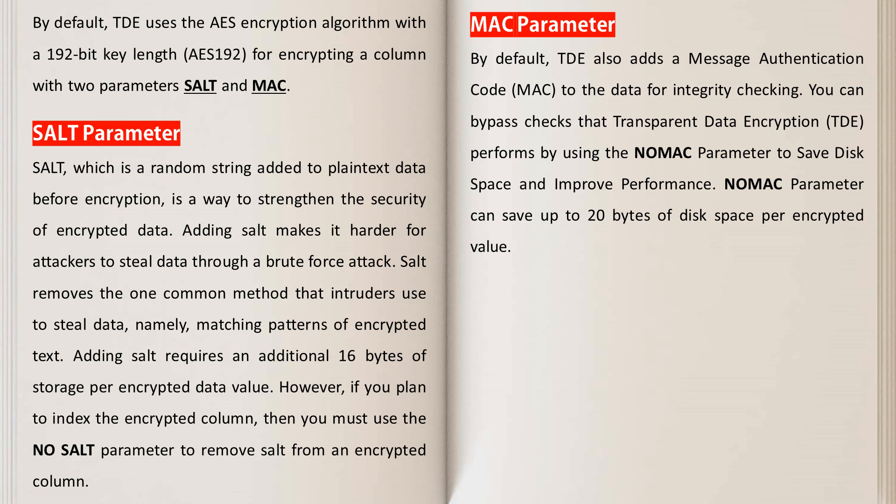By default, transparent data encryption also adds a message authentication code (MAC) to the data for integrity checking. You can bypass the check that TDE performs by using the NO MAC parameter to save disk space and improve performance. The NO MAC parameter can save up to 20 bytes of disk space per encrypted value.